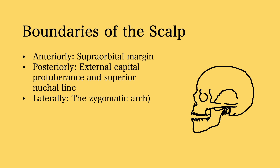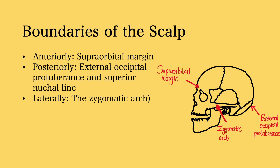Boundaries of the scalp. The boundaries of the scalp can be referred to anteriorly, posteriorly, and laterally. Anteriorly, the boundaries of the scalp are the supraorbital margin, extending from the superior border of the orbit — the bone structures of the skull that house the eye and associated structures. Posteriorly, the boundaries are the external occipital protuberance and the superior nuchal line. And finally, the lateral boundaries of the scalp are found at the zygomatic arch.